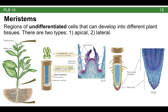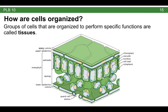Moving on from shoots and roots, we'll next talk about tissues. Groups of cells within a plant are organized into structures called tissues that perform specific functions, and there are lots of different kinds of tissues in a plant. Here I'm showing you a cross section of a leaf — groups of cells organized to perform the specific function of photosynthesis. When you look more closely at a leaf, you find it has quite a bit of complexity. On the outside of the leaf, there is a waxy cuticle that helps prevent desiccation, secreted by the upper epidermis cells.